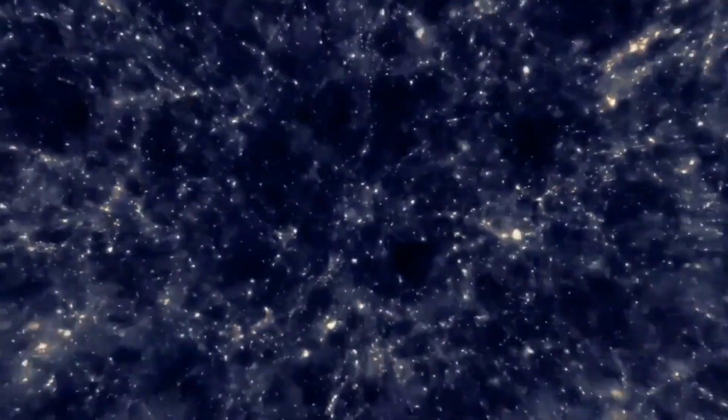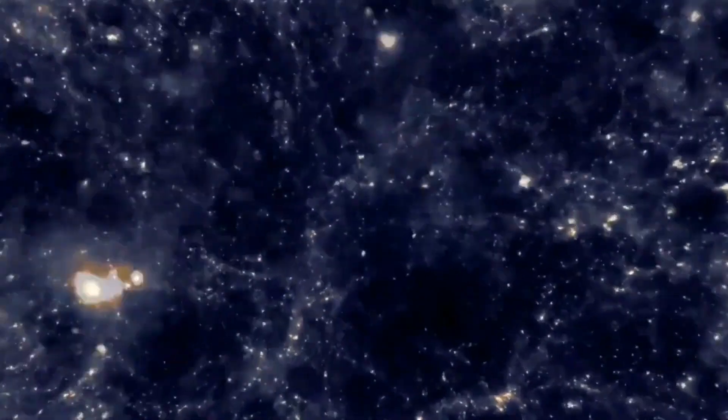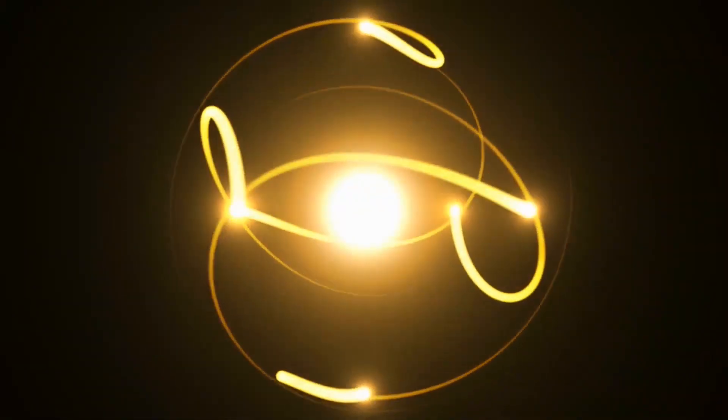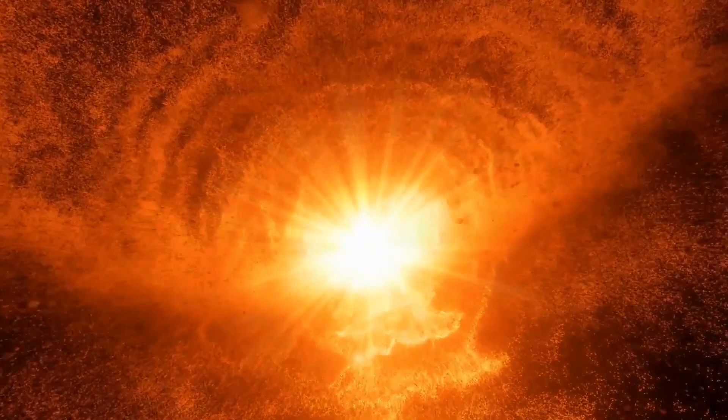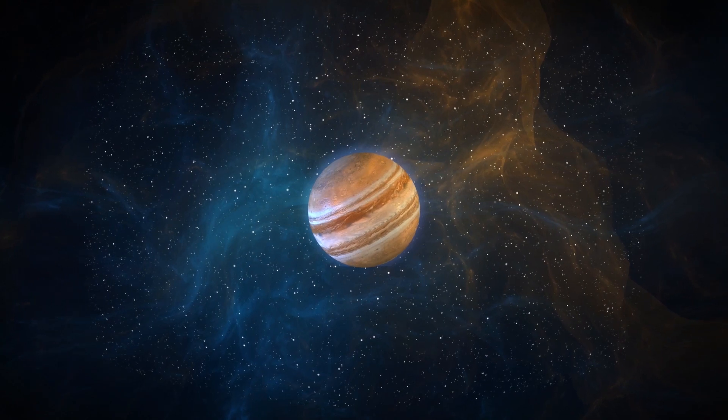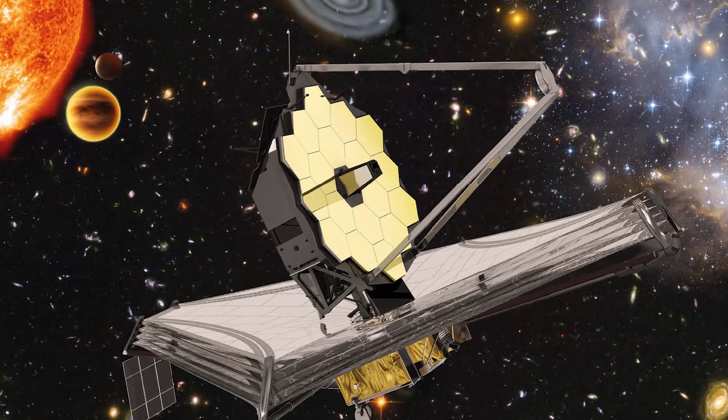Therefore, surface mass ejections and coronal mass ejections may be different events. Betelgeuse is now so huge that if it replaced the sun at the center of our solar system, its outer surface would extend past the orbit of Jupiter.